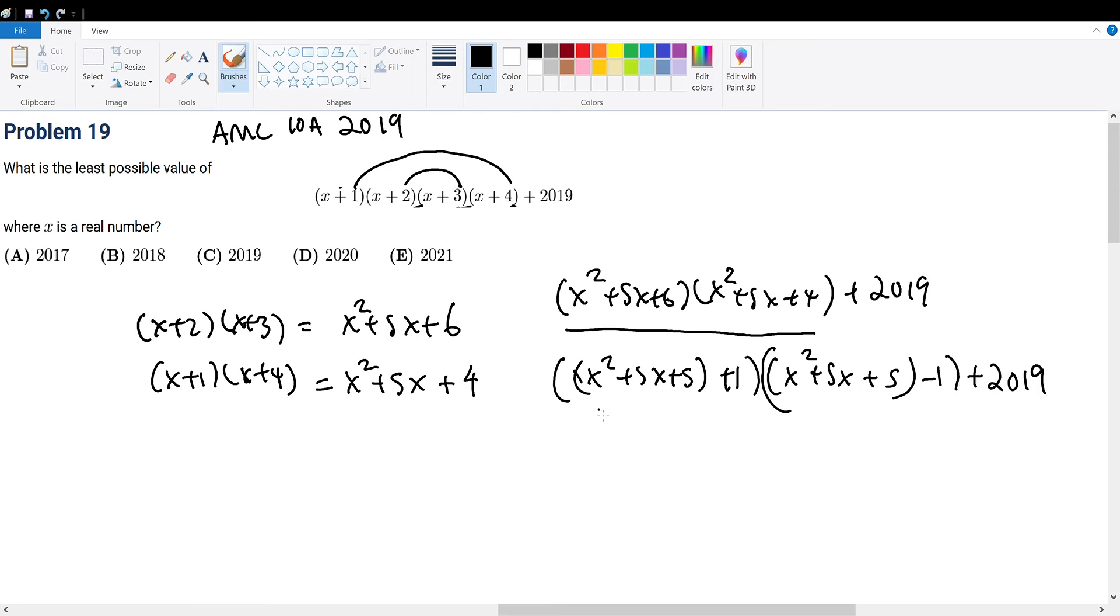Now we can treat this term and this term as a. So this becomes a plus 1 times a minus 1 plus 2019, and this is obviously a squared minus 1. So this becomes x squared plus 5x plus 5 squared minus 1 plus 2019.